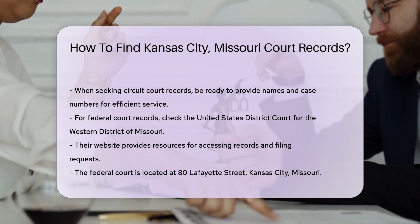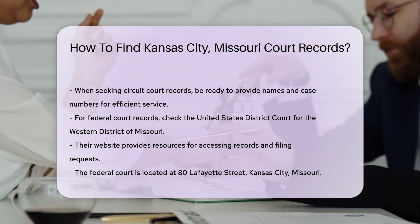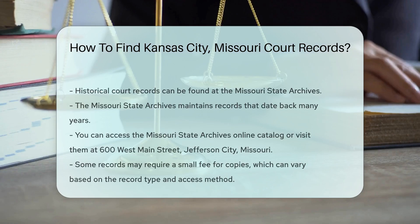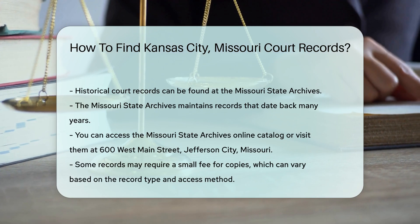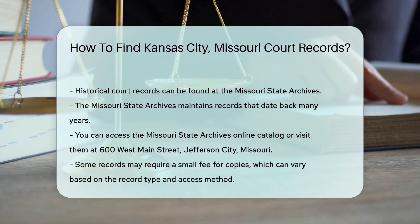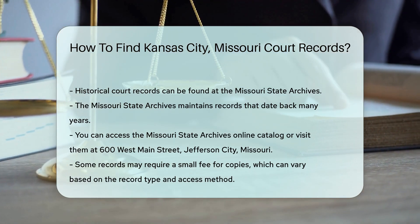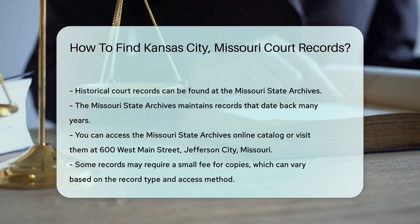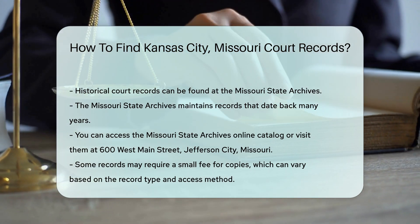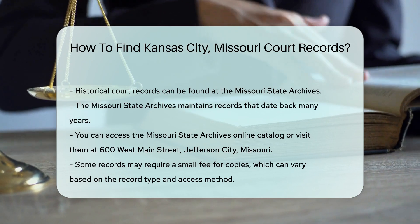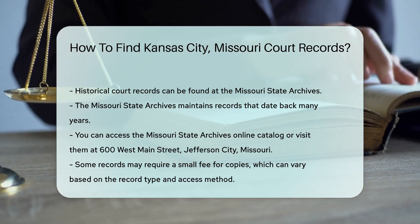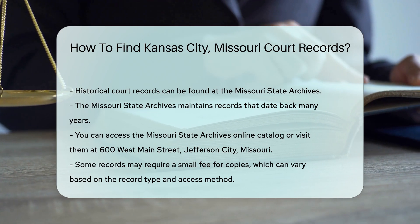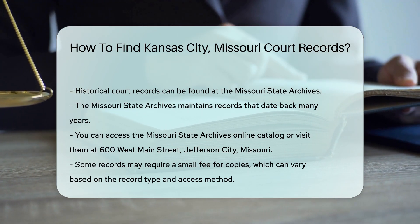If you are looking for historical court records, the Missouri State Archives is a valuable resource. They maintain a collection of records that date back many years. You can access their online catalog or visit them at 600 West Main Street, Jefferson City, Missouri. Remember that some records may require a small fee for copies. Fees can vary based on the type of record and the method of access, so it's a good idea to check the specific court's website for detailed fee structures.